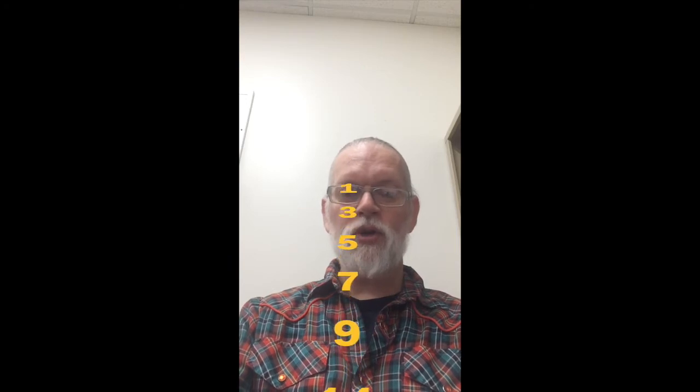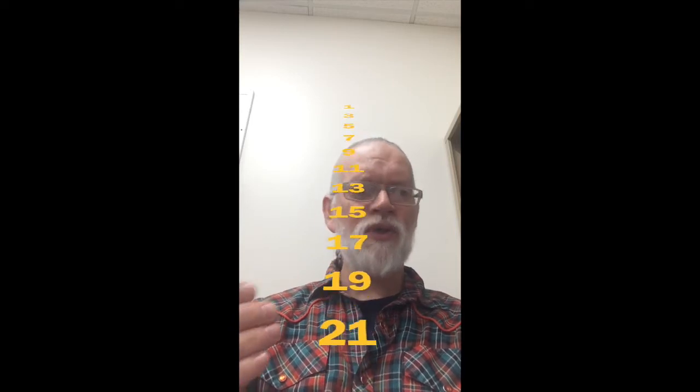In the fractions, each of the numerators, the number on the top, are always odd numbers. Why? Because once you get down to the half, there's no need to put four eighths. So that's why we don't have even numbers in there.